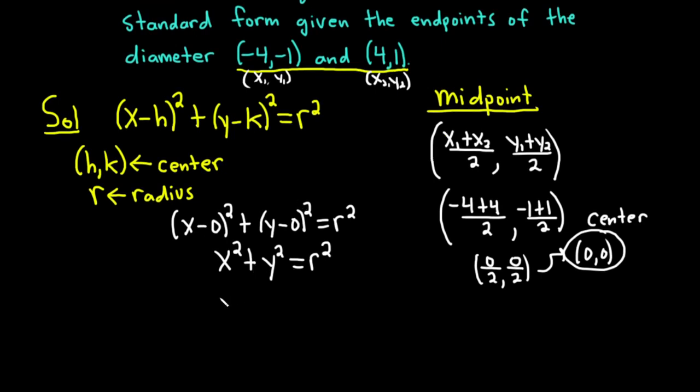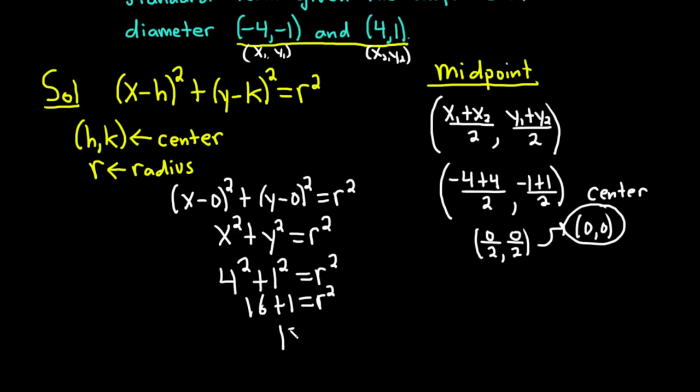So plugging in 4 for x, we get 4². Plugging in 1 for y, we get 1², and that's equal to r². So 4² is 16, and 1² is 1, and that equals r². We have that r² equals 17. You could take the square root, but you don't need to because we just want the equation of the circle.